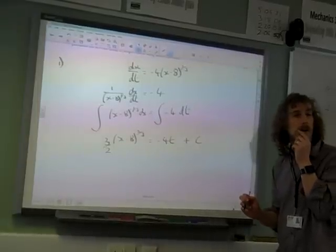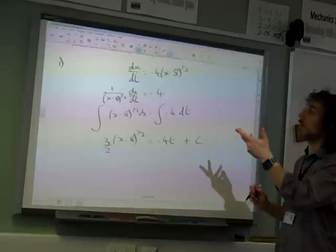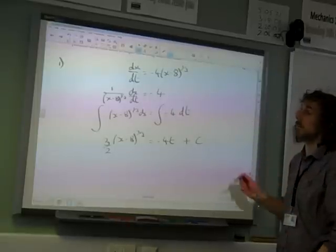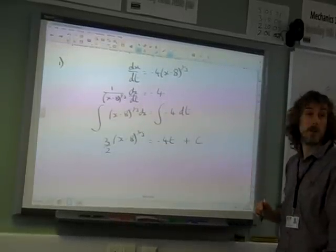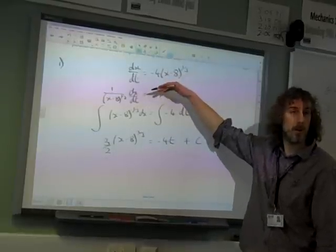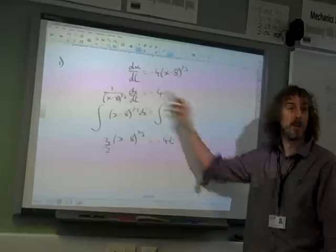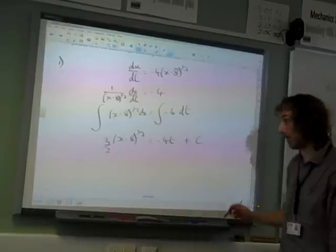Is there anything wrong with just flipping it at the start and saying that dt by dx is minus 4? No, that would be alright. dt by dx is 1 over all of that, and then you end up with the same thing, don't you? You can just have it written the other way around. So that would be fine as well.